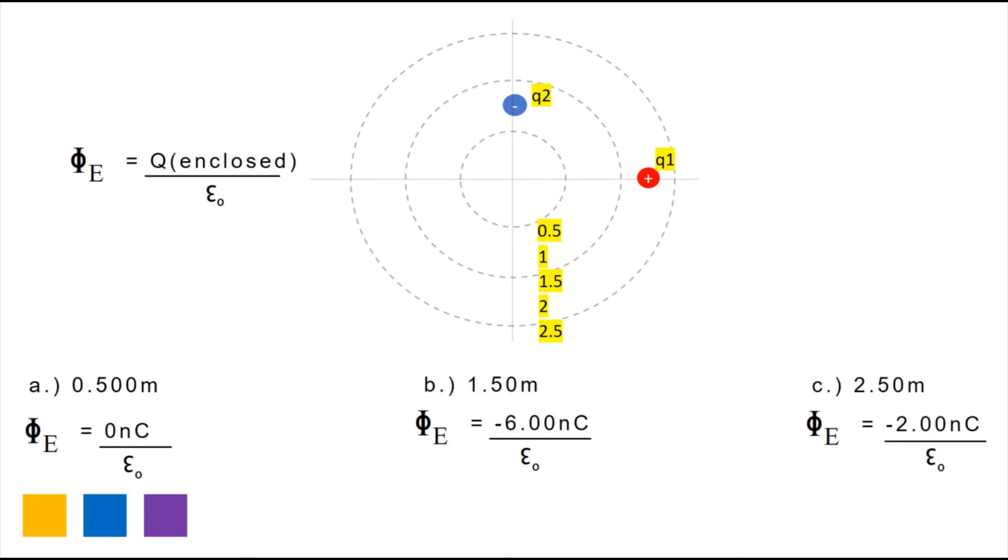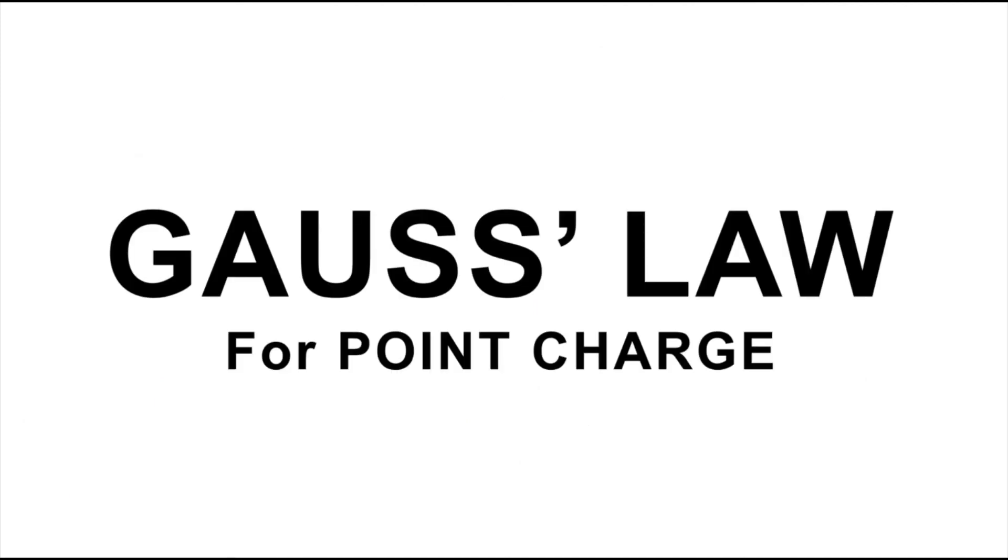And for the third part, or the 2.50 meter radius, you can see here that Q1 and Q2 are enclosed on the biggest circle, which means that we are going to add Q1 and Q2. Q1 is equal to 4 nC, while Q2 is equal to negative 6 nC. Adding them up will result in negative 2 nC over epsilon 0. And that is all.